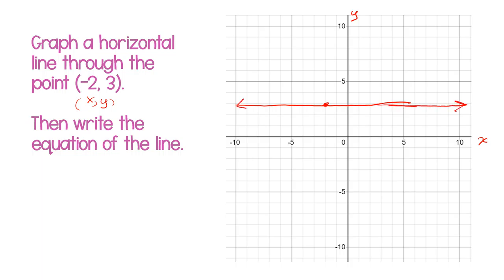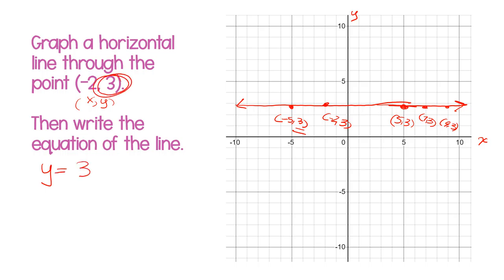We're asked to write the equation of that line. Notice that this is the point negative 2, 3; this is the point negative 5, 3; this is the point 5, 3; we could go 7, 3, and even 9, 3. All of the y-coordinates of the points on this line are the same — they're all 3. So when I write the equation of any horizontal line, it's going to be y equals whatever the y-coordinate is. In this case, it's y equals 3.